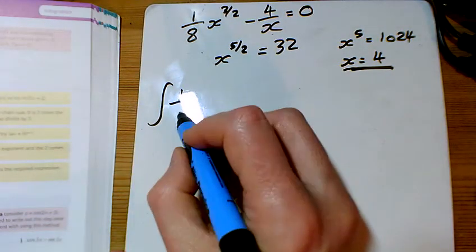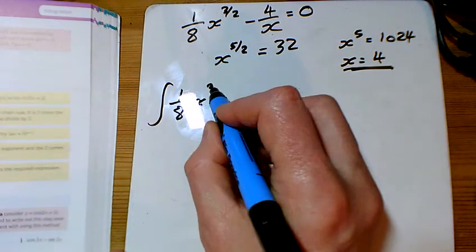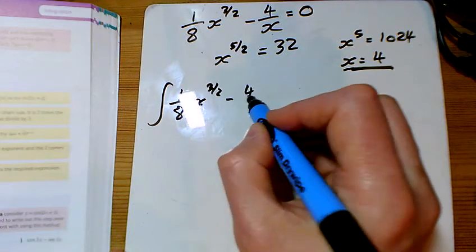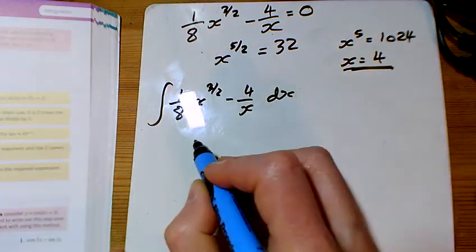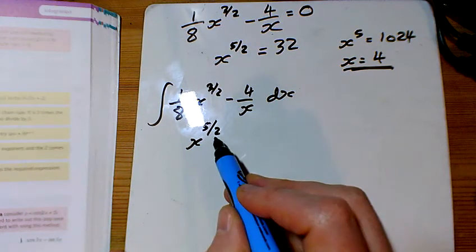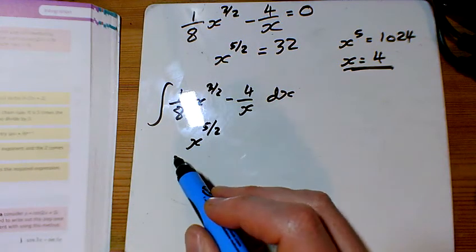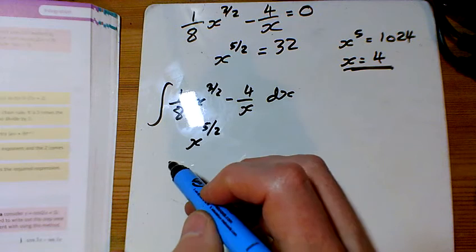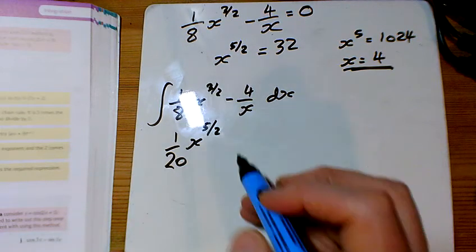But part b is what we're doing in this exercise. We need to integrate this thing. And integrating, the power goes up by 1, and we're dividing by this new power, so multiplying by 2 fifths. So I've got 2 over 40 there, so I've got 1 twentieth there.